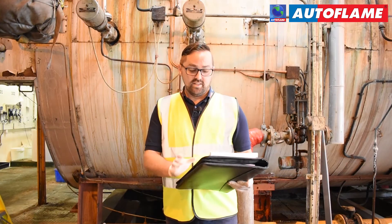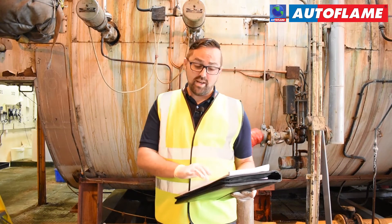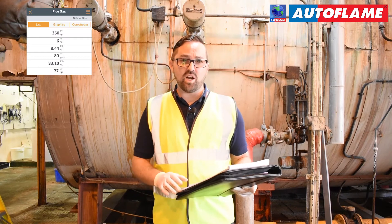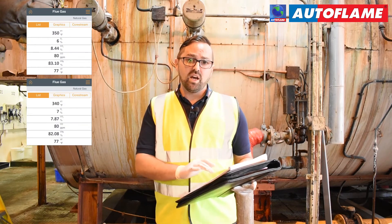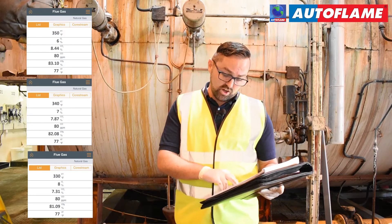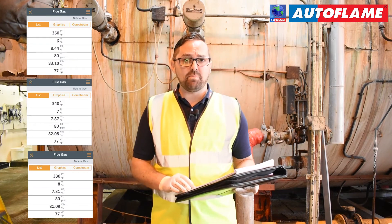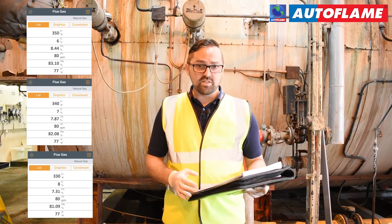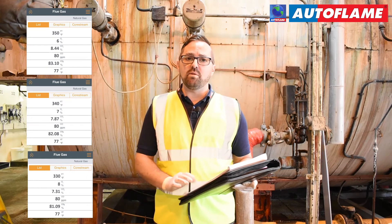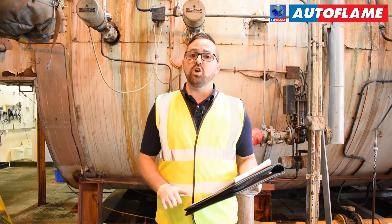Hey guys, readings are as follows. At high fire we were 6% O2, mid fire we were 7% O2, and low fire 8% O2. Across the firing range, the CO is 80 ppm and the NOx is 50 ppm. So real good savings to be made here. It'll be really interesting to see what our emissions calculator has to say. Over to you guys.